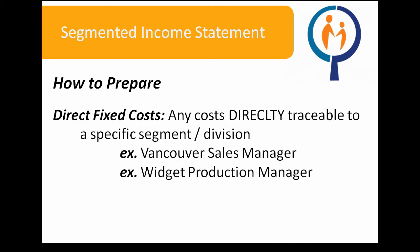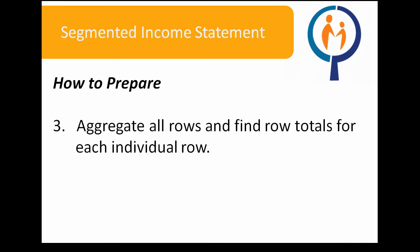A reminder that direct fixed costs are any costs directly traceable to a specific segment or division. For example, a Vancouver sales manager would be directly traceable to the Vancouver division, whereas a widget production manager would be directly traceable to the widget production line. Following that, you want to aggregate all rows and find row totals for each individual row. For example, if direct fixed costs totaled $20,000 for Vancouver and $20,000 for Surrey, you would list $40,000 of direct fixed costs in the total column.